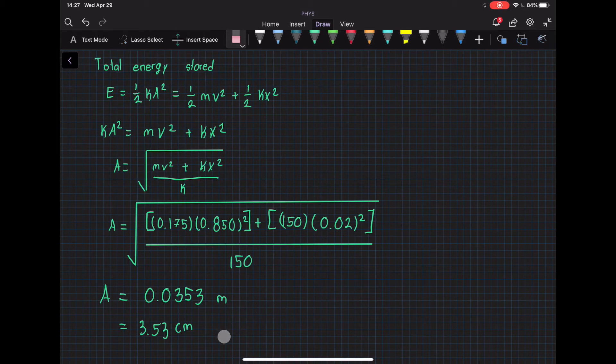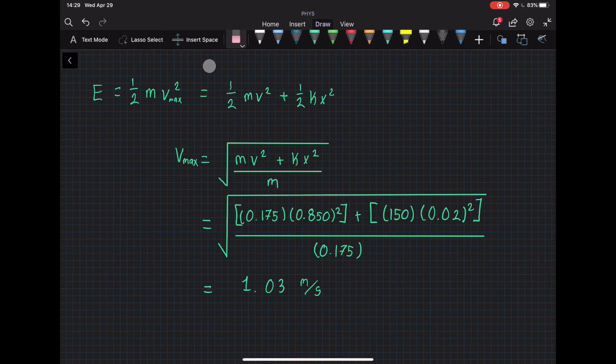We need it in centimeters, so we convert it. For part B we're going to use a very similar equation because the stored energy is also equal to this, and we solve for the velocity, which gives us a maximum velocity. We plug in numbers and we get a velocity of 1.03 meters per second.